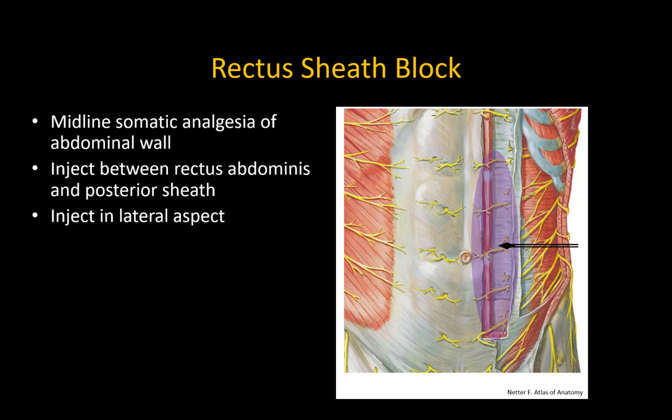There are a few caveats that should be noted. First, there is no posterior sheath inferior to the arcuate line, which is why landmark-guided rectus sheath blocks are not performed below the umbilicus. However, infraumbilical blocks can be done if ultrasound guidance is used.